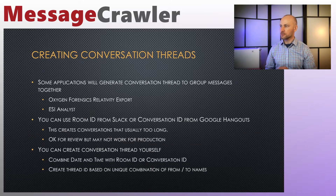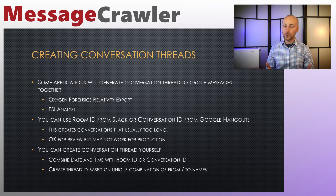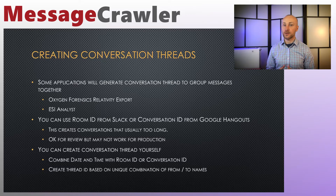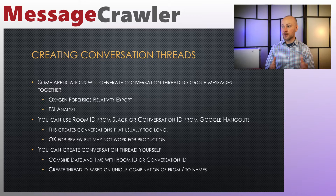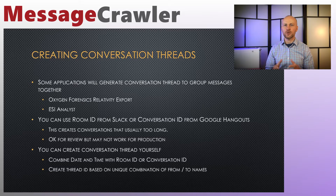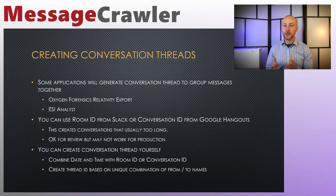Some applications will generate a conversation or group identifier for you. For example, Oxygen Forensics and Relativity Export generate a thread ID, and ESI Analysts generate multiple thread IDs. You're welcome to use those thread IDs or conversation identifiers to group your messages together — you can use room ID, Slack ID, or Google Hangout chat ID. But in my experience, those conversations tend to be too long, and I find it's a good idea to break them up by date.